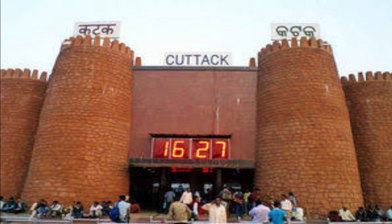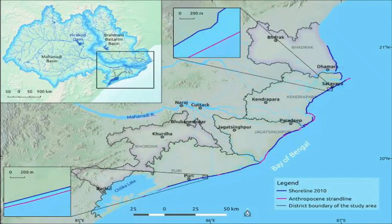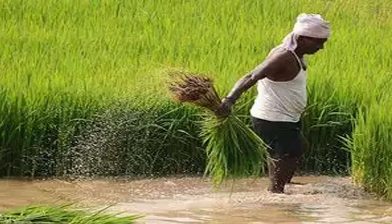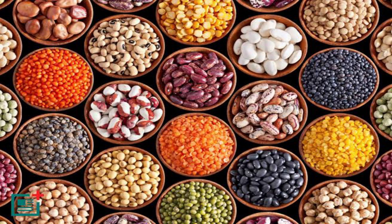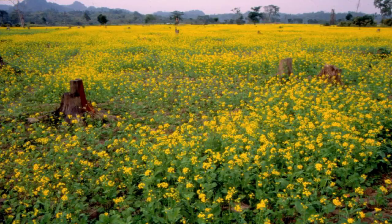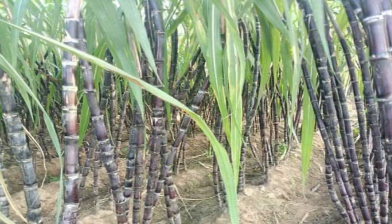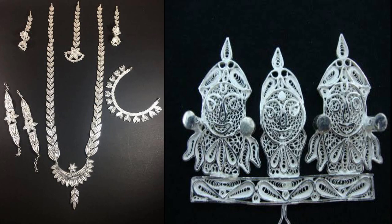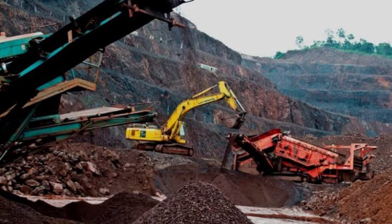The delta formed by the Mahanadi river is very fertile. Agriculture is an important economic activity of the people living here. The main crop that is grown here is rice. Other important crops grown here are pulses, oil seeds, jute, sugarcane, and coconut. Handloom sarees of Odisha and jewelry and decorative items made of silver are very popular. Mining is another important industry of Odisha.